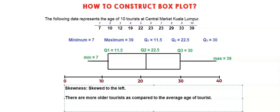This means that if you calculate the mean for this data, the mean will be 21.7 years old. The average age of tourists is 21.7.